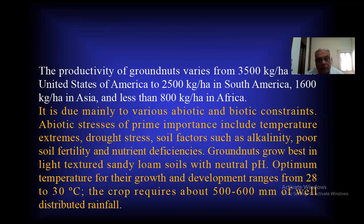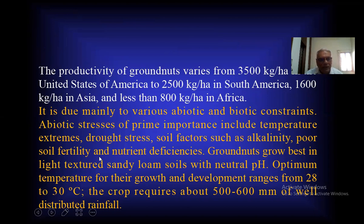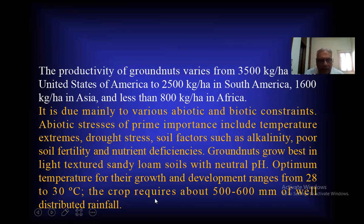Low productivity is due to various abiotic and biotic constraints. Abiotic stresses of importance include temperature extremes, drought stress, soil factors such as alkalinity, low soil fertility, and nutrient deficiencies. Groundnut grows best in light-textured sandy loam soils with neutral pH. The optimum temperature for growth and development ranges from 28 to 30 degrees centigrade, and the crop requires about 500 to 600 millimetres of well-distributed rainfall.